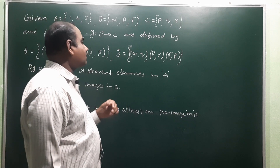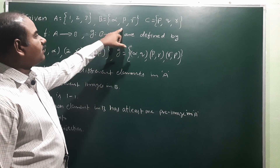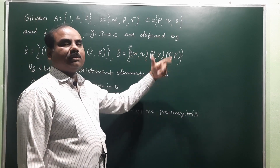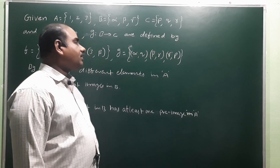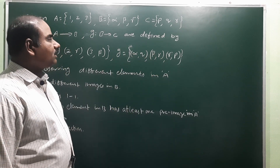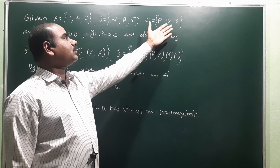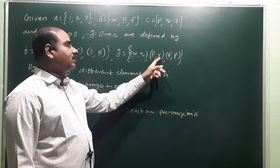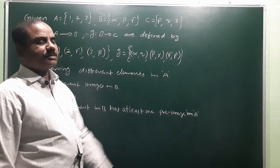Now we prove g is bijective. g is a function from B to C, so domain is {alpha, beta, gamma} and codomain is {p, q, r}. Different elements in the domain have different images in the codomain: image of alpha is q, image of beta is r, image of gamma is p. So g is also one-one, and every element in the codomain has at least one preimage in the domain.